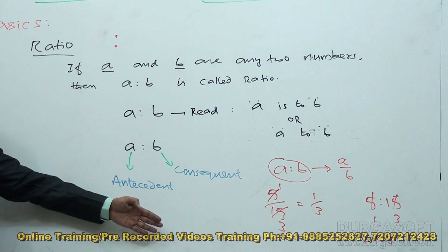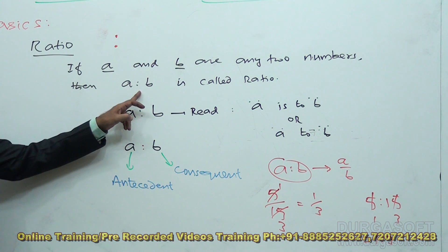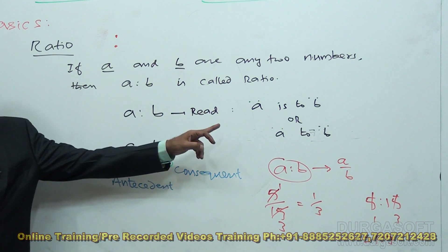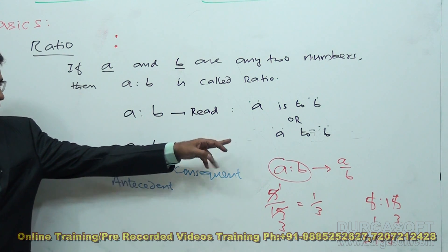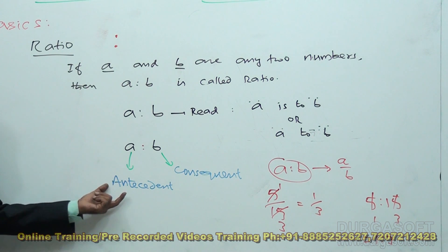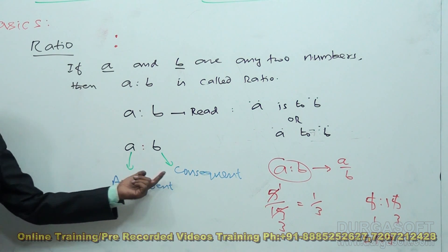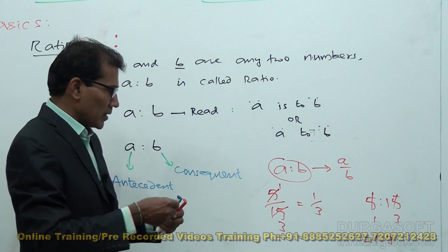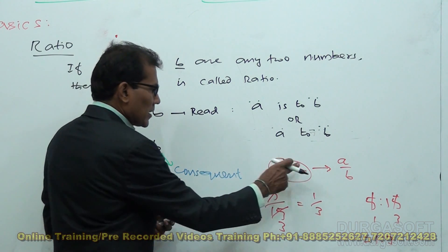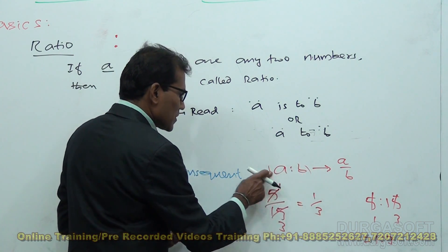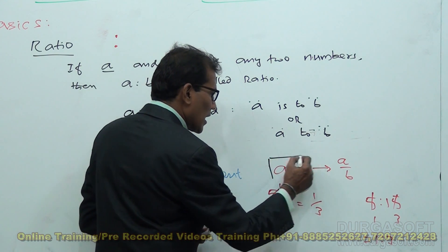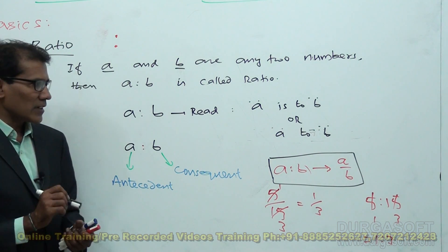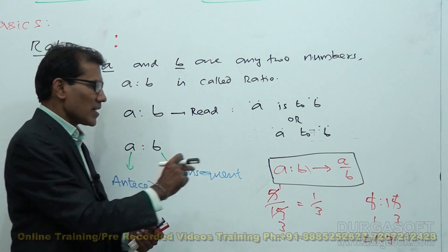Now we have come to know about the ratio of two numbers. The two-number ratio is expressed as A is to B, read as 'A is to B' or 'A to B.' The first quantity is called the antecedent, the second is called the consequent. A is to B is exactly A by B — this is a very important concept. Many times we need to use A by B instead of A is to B.